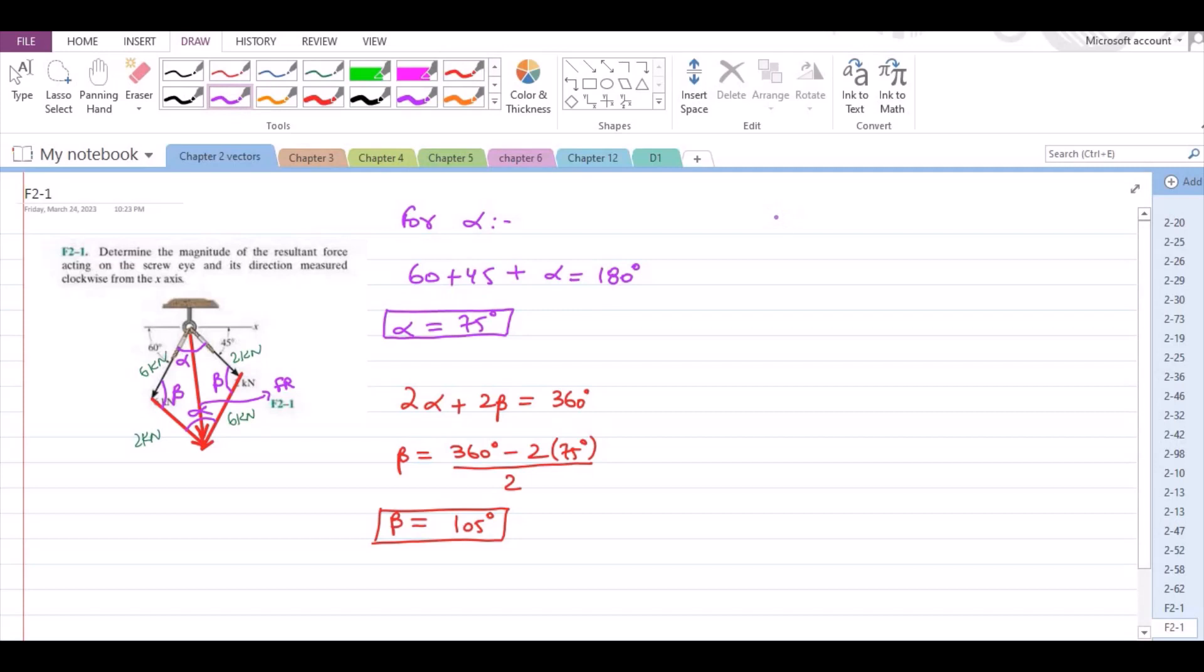Now, for FR, we could apply the cosine law. For FR, we have square root of 6 squared plus 2 squared minus 2 times 6 into 2 cos 105 degrees.